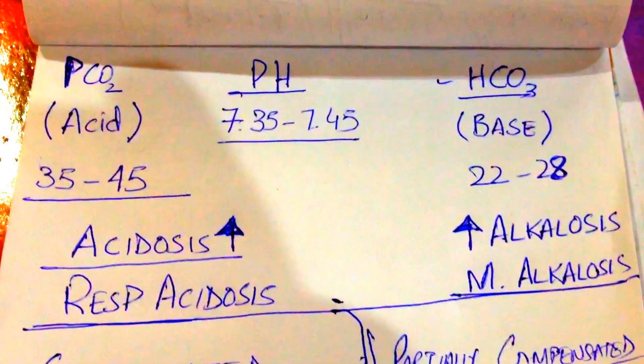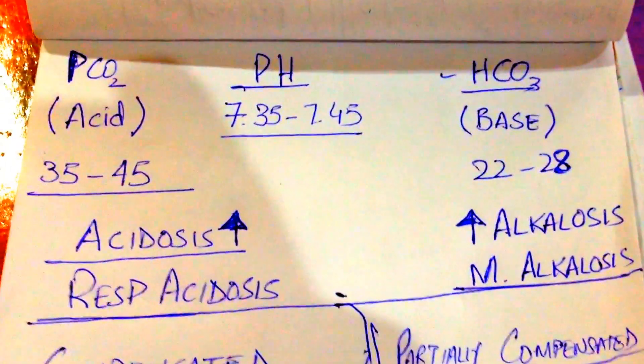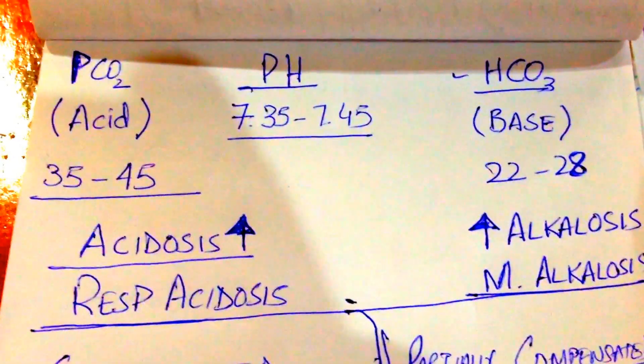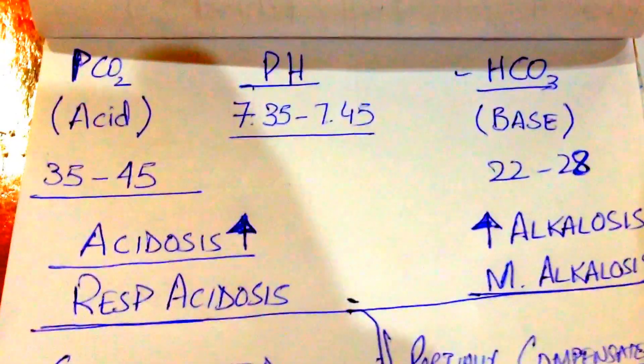Today we are going to talk about arterial blood gases made easy. There are three components to understand ABGs: CO2, pH, and HCO3.